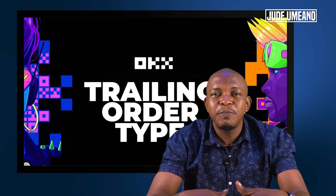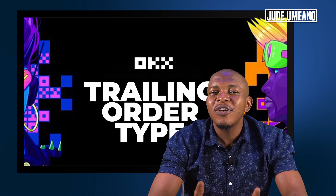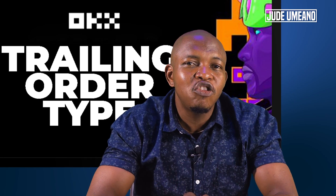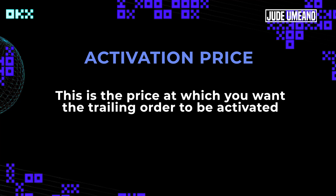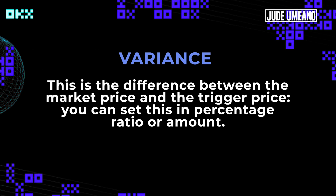The trailing order type can be used in both buying and selling. It can be used to buy at a much lower price when the coin is dropping, or to sell at a much higher price when the coin is rising. There are three terms you need to be familiar with: Activation price — the price at which you want the trailing order to be activated. Trigger price — the actual price at which the buy or sell order takes place, which changes continuously with the market price and the variance. Variance is the difference between the market price and the trigger price, and you can set this in percentage ratio or amount.